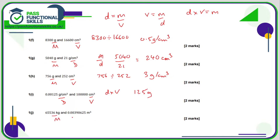Here we've got a mass and a volume, so we want the density. Density is the mass divided by the volume, and that results in 16,777,216 kilos per cubic metre.